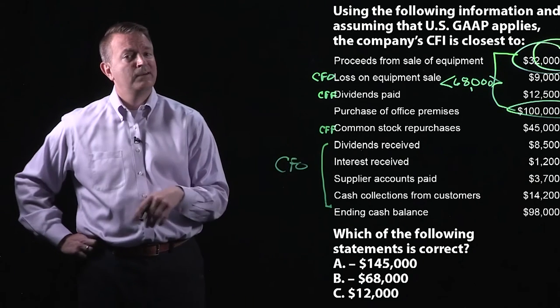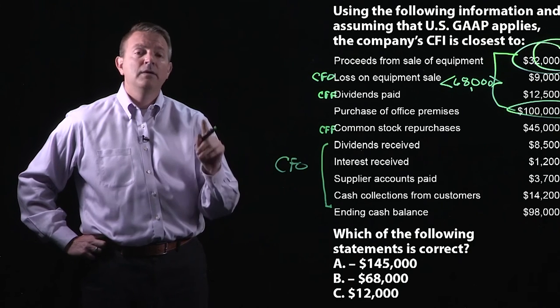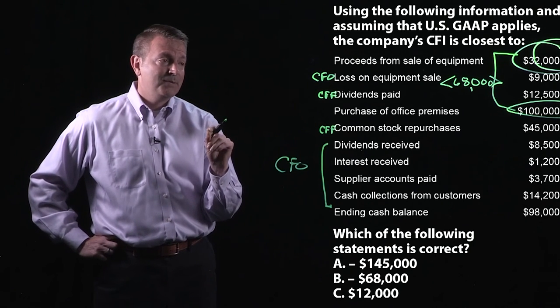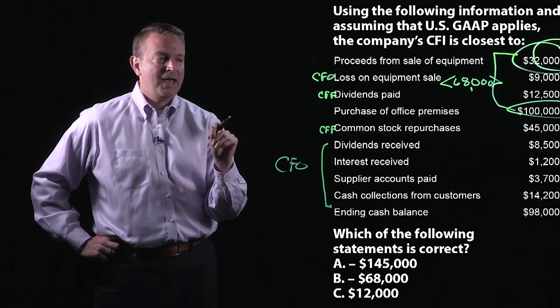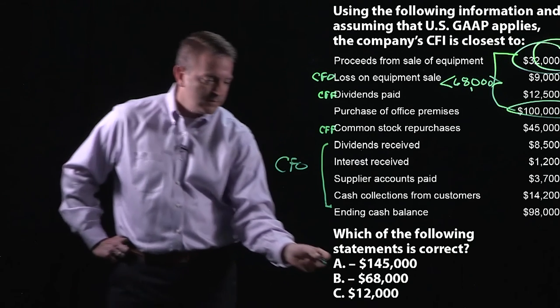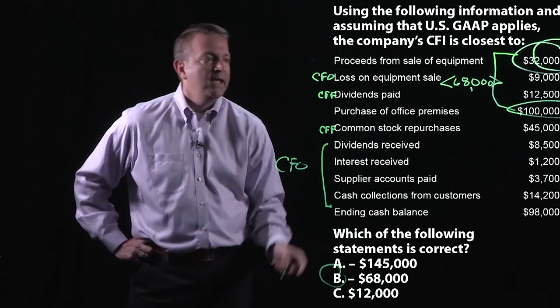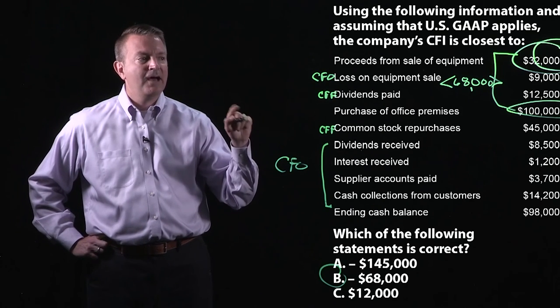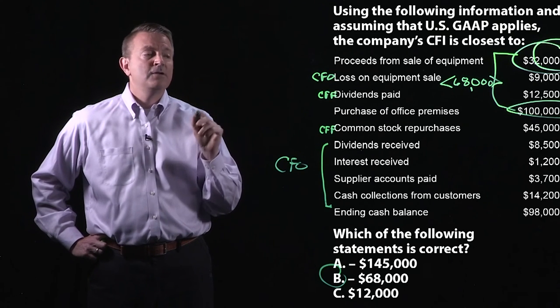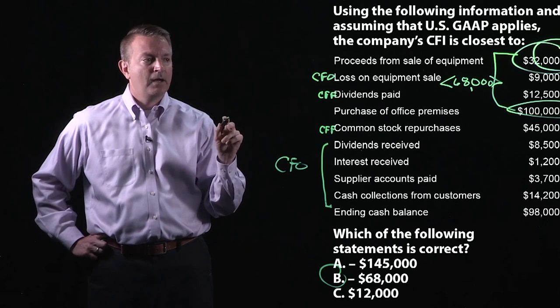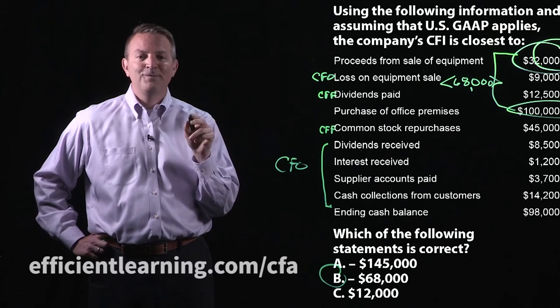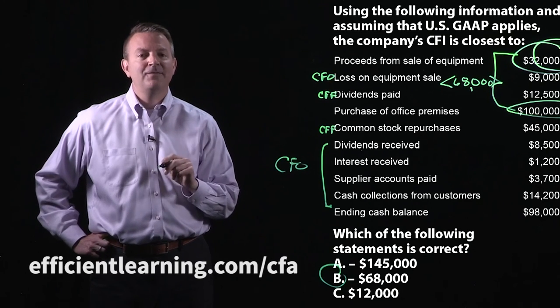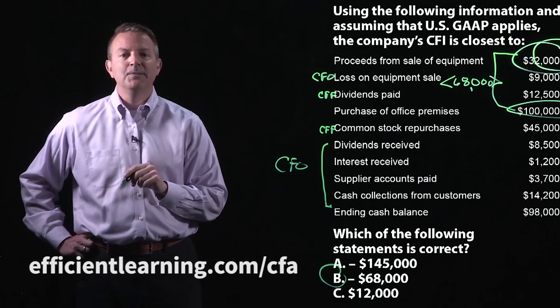For now, the answer is B, right down here. It's the negative $68,000 because it's the combination of the $32,000 you received and the $100,000 out for items that you've invested in for the long term. So if you want to learn a little bit more, come to EfficientLearning.com/CFA and we'll go into this question just a little bit deeper.